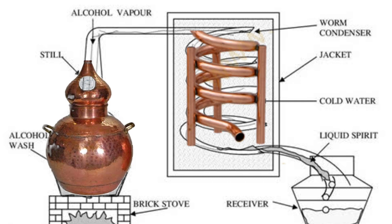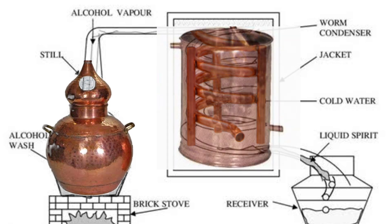The worm condenser is a spiral tube also made of copper and is connected to the still by a copper pipe. The worm passes through a jacket or condenser.